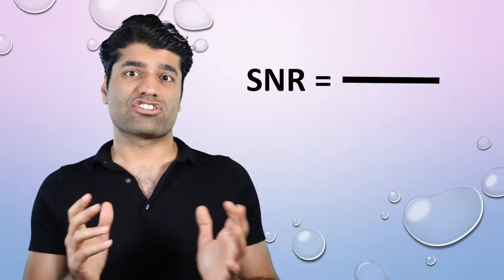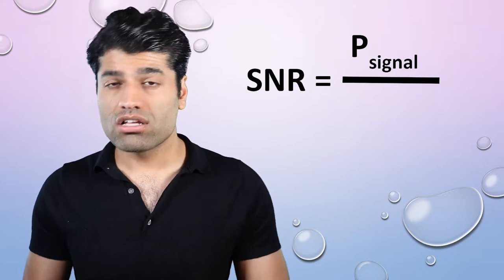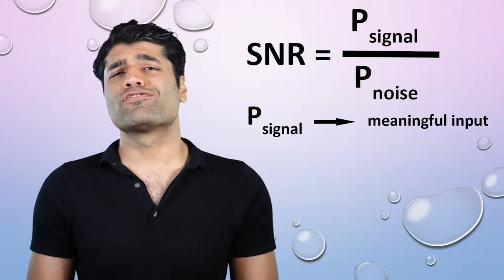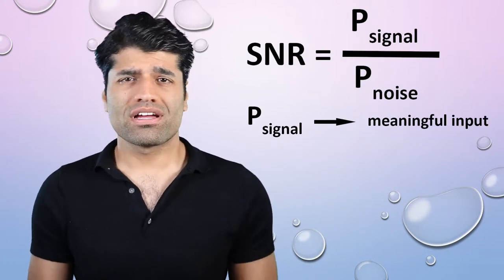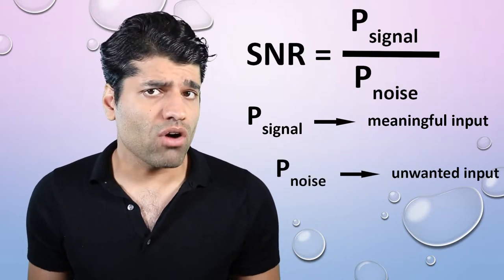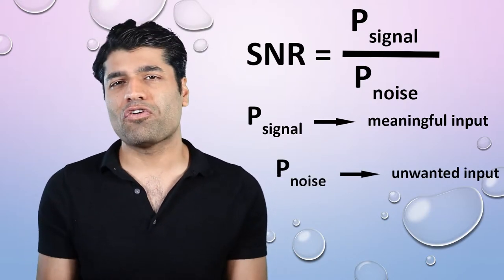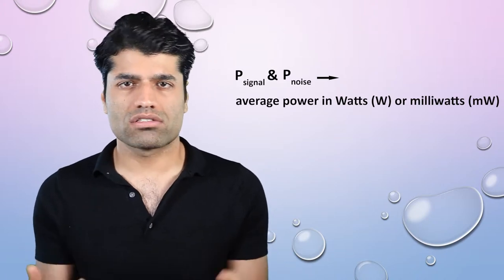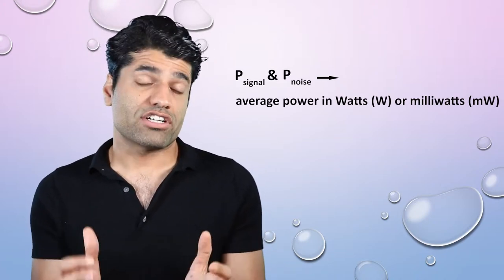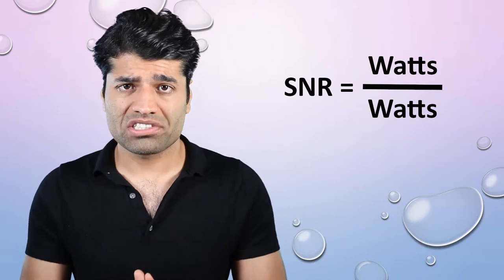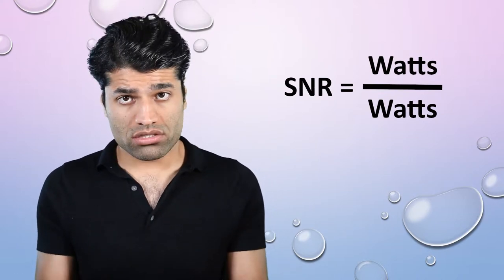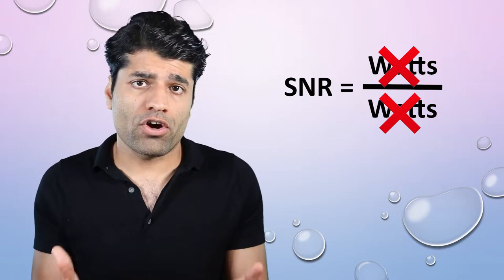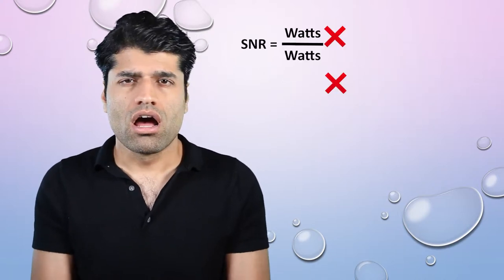It is the ratio of power of signal to the power of noise. Signal is the meaningful input and noise is the unwanted input to the microphone. The unit of power is in watts or milliwatts. The ratio of two identical units — that is, watts — will cancel each other and make SNR a pure number.